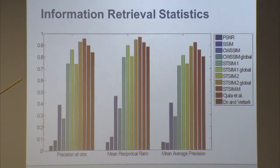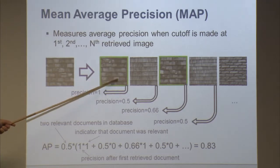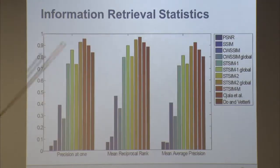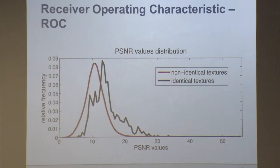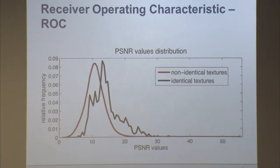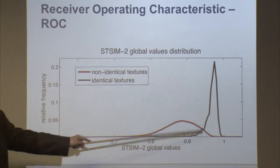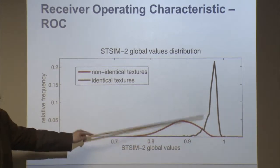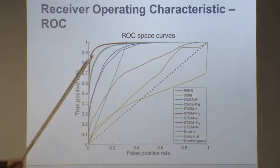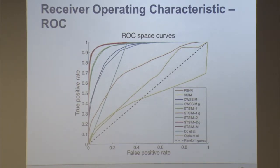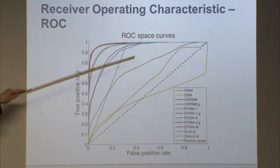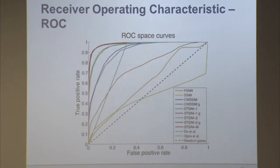To determine a threshold, you look at the distributions of metric values for similar and non-similar textures. With PSNR the histograms overlap, but with a better metric they are separated. The receiver operating characteristic curve tells you how well the metric performs accounting for the threshold — the closer to the upper-right corner, the better the metric. This gives us a full evaluation tool.